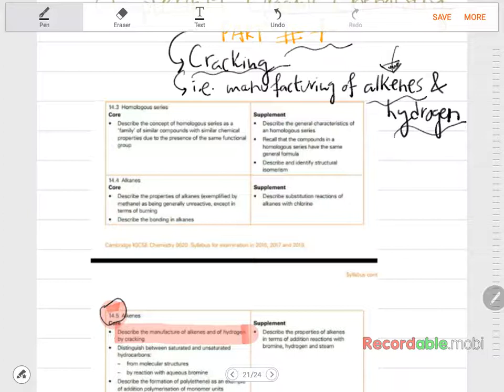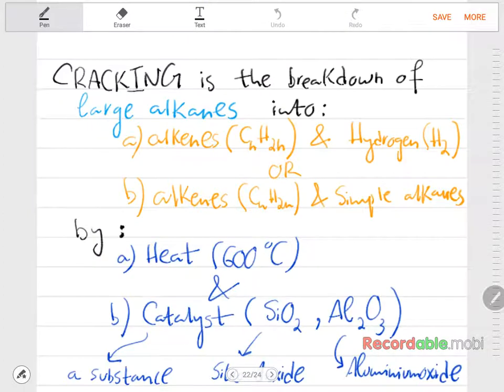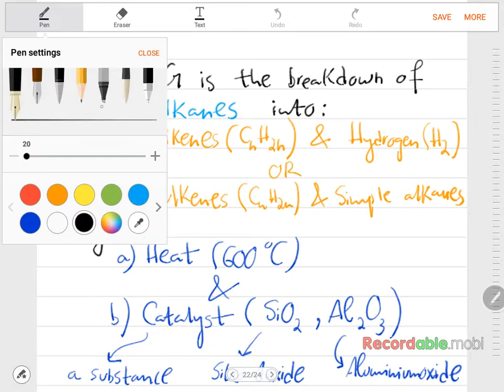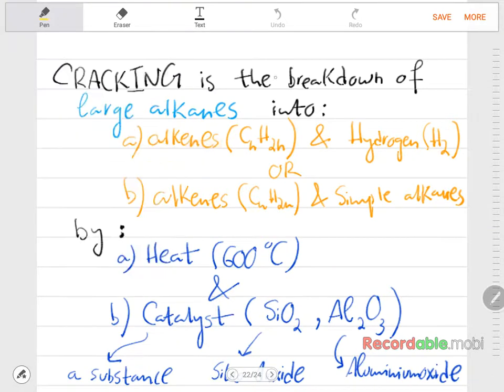Let's define cracking. Cracking is basically the breakdown of large alkanes into two options: either alkenes and hydrogen as the products.